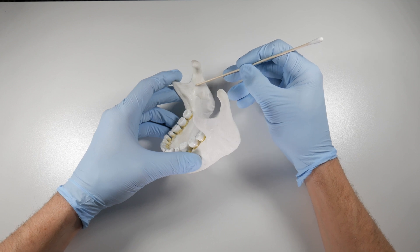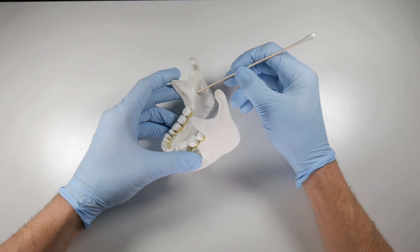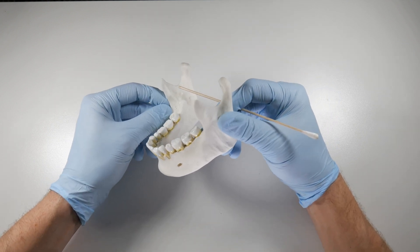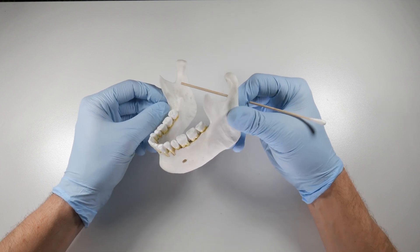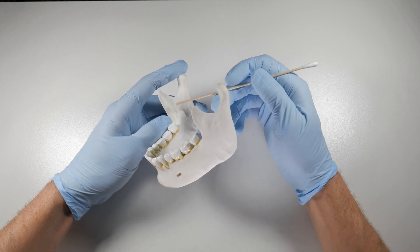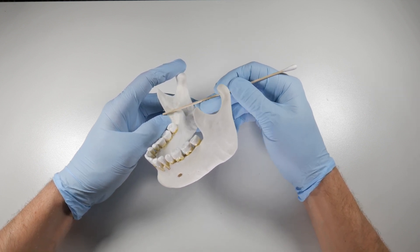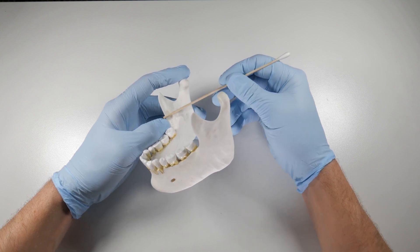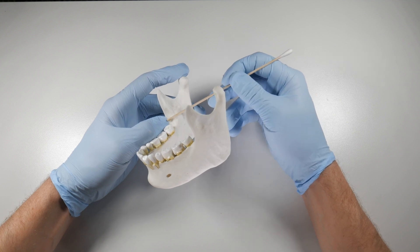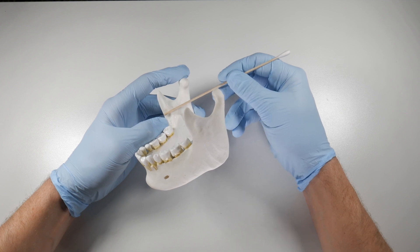If you miss high, gravity is going to help for the anesthetic to percolate down into this foramen. What we do when we aim high is instead of bisecting your thumbnail, maybe aim for the top of your thumbnail when the thumb is resting in the coronoid notch. This is true for all situations, even in class 3 patients who have a lower coronoid notch. You should be aiming higher on these patients anyways because the lingula will actually be higher relative to the coronoid notch.